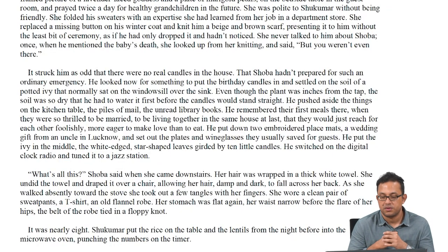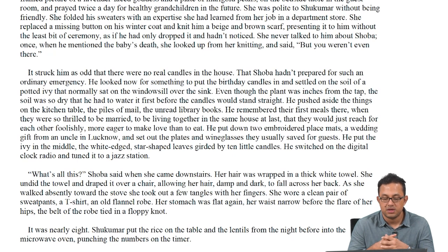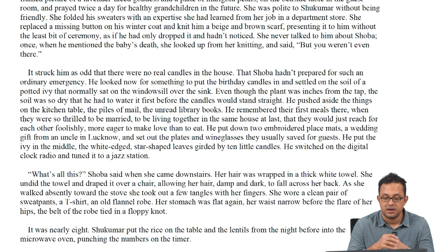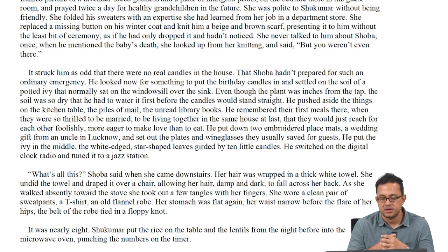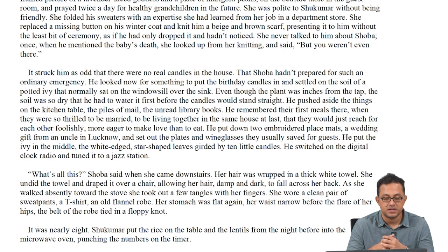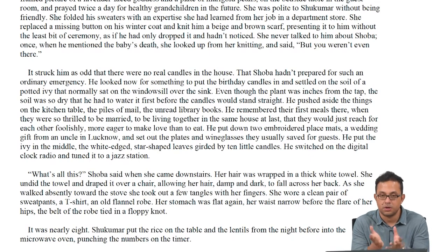'What is all this?' Shobha said when she came downstairs, her hair wrapped in a thick white towel. She undid the towel and draped it over a chair, allowing her damp, dark hair to fall across her back. As she walked absently towards the stove, she took out a few tangles with her fingers. She wore a clean pair of sweatpants, a t-shirt, and an old flannel robe. Her stomach was flat again, her waist narrow before the flare of her hips, the belt of the robe tied in a floppy knot — very careful details suggestive of her post-pregnancy situatedness.